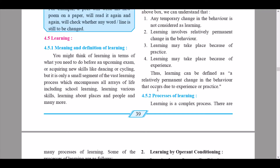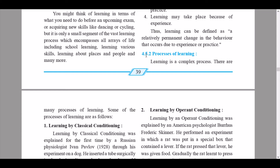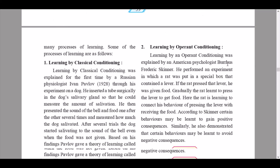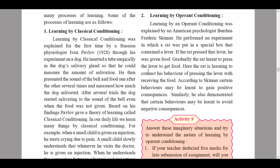Unit 4.5.2 covers the processes of learning. This has been included in the reduced syllabus for students appearing for boards in 2021 due to the COVID-19 situation, so current students do not need to learn this — it is only for juniors. Learning is a complex process. There are five processes of learning: learning by classical conditioning, learning by operant conditioning, learning by cognitive processes, learning by assimilation and accommodation, and learning by observation.